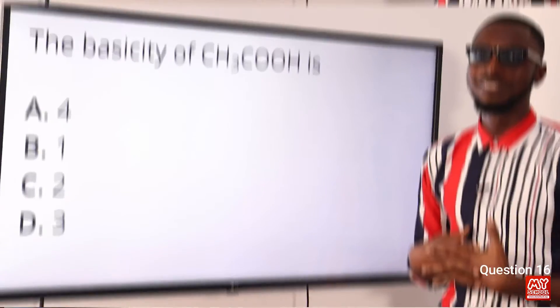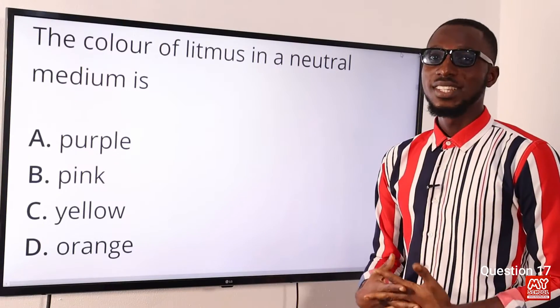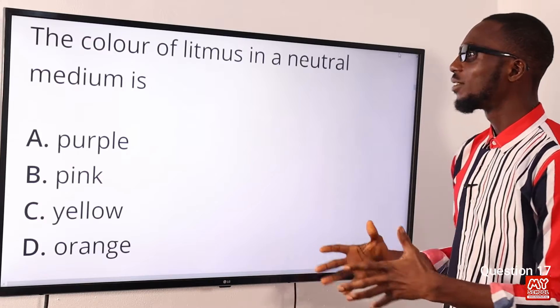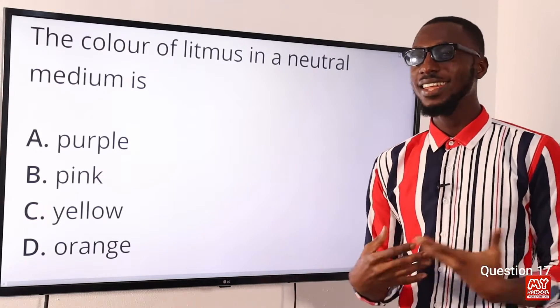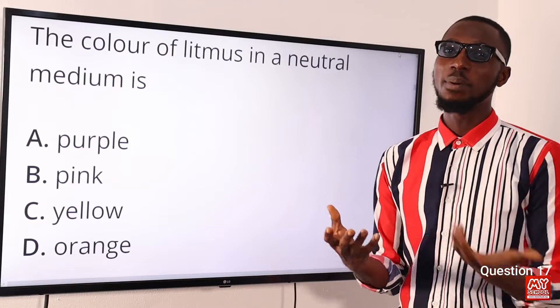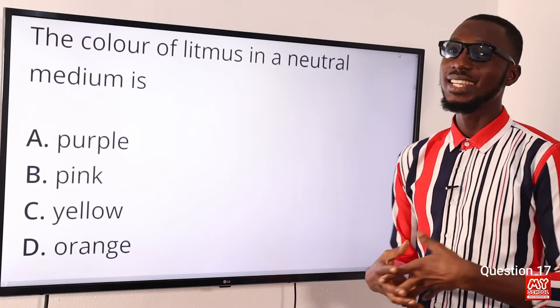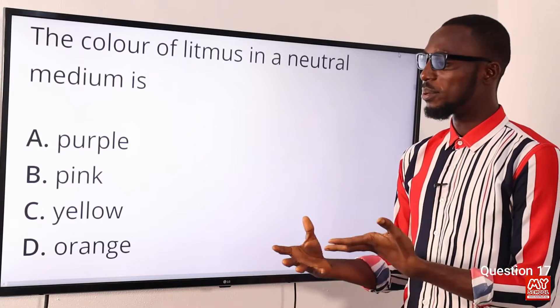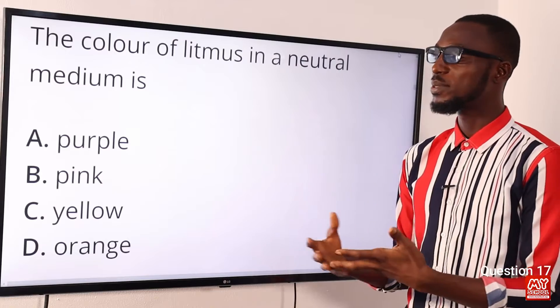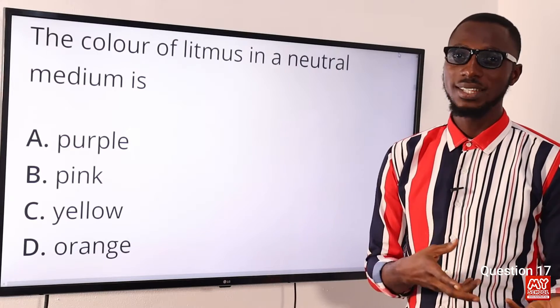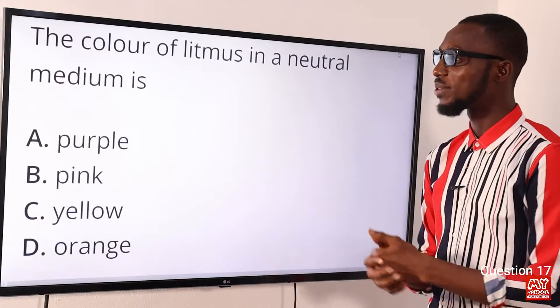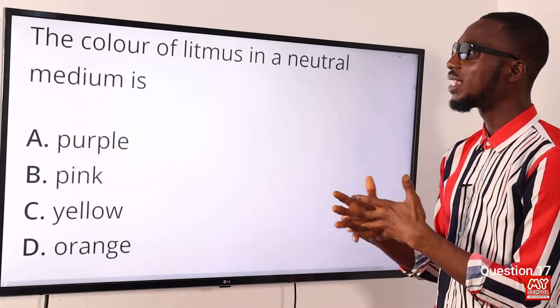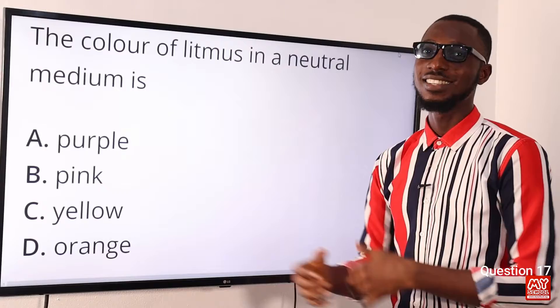Question 17: The color of litmus in a neutral medium is what? In an acid it is red, in a neutral medium it is purple, and in an alkaline medium it is blue. Looking through the options — acid: red, neutral: purple, alkaline: blue — the correct option is option A. The color of litmus in a neutral medium is purple.